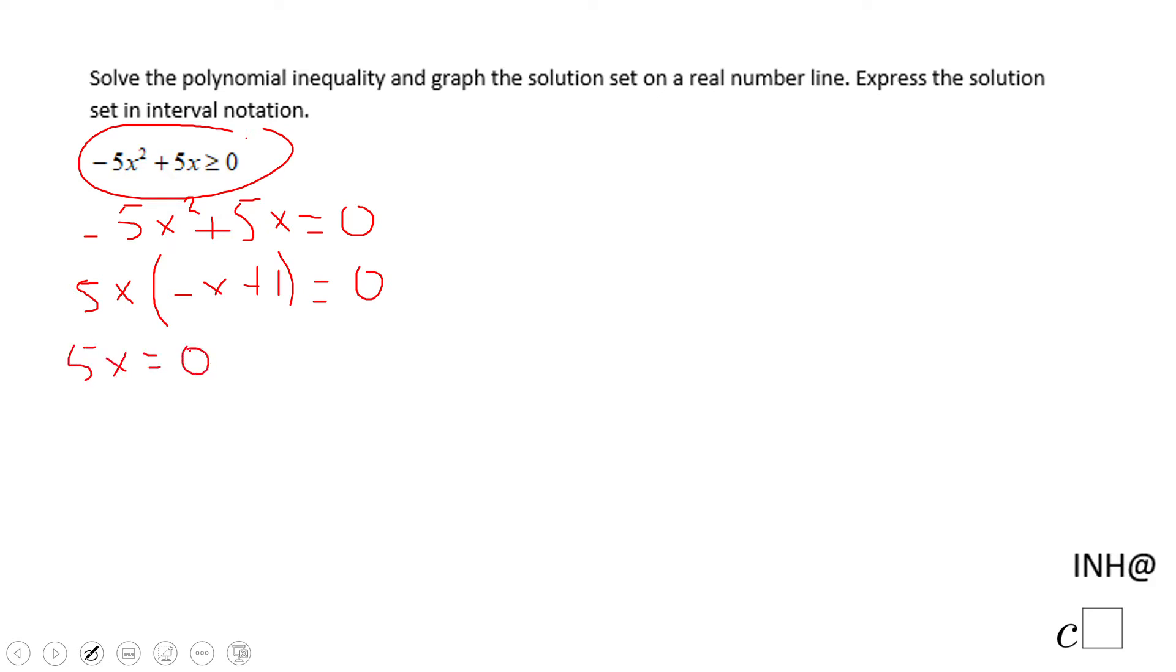One is coming from 5x equals zero, which is going to give me x equals zero. And the other one is going to be negative x plus one equals zero, which is going to give me x equals one.